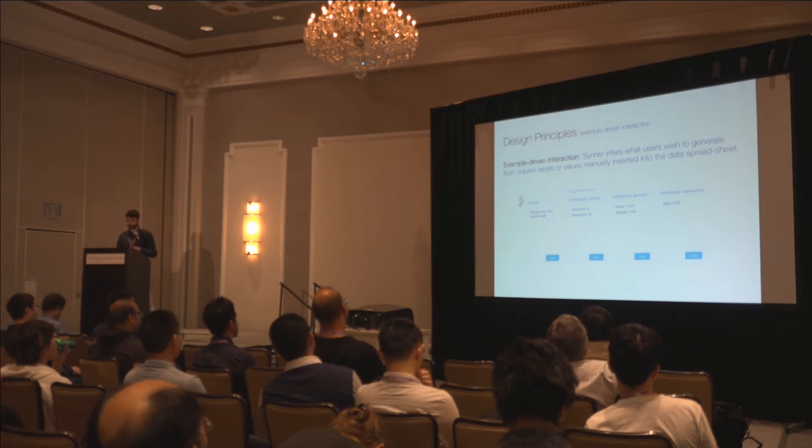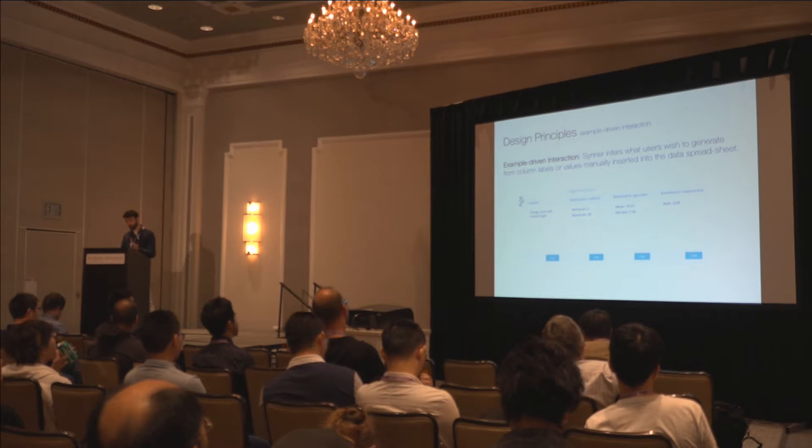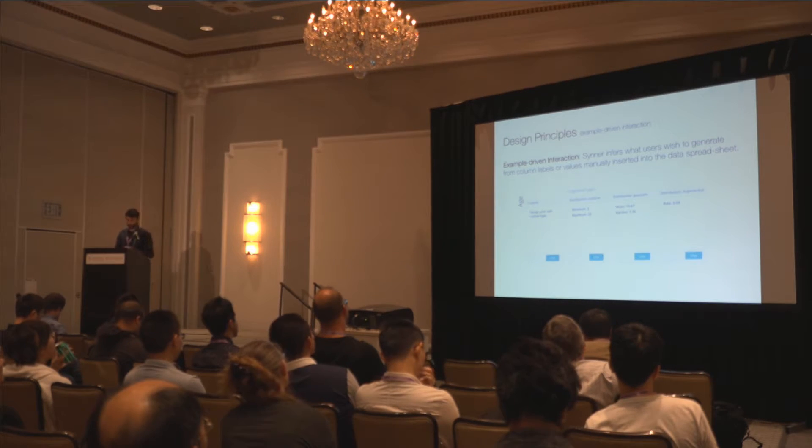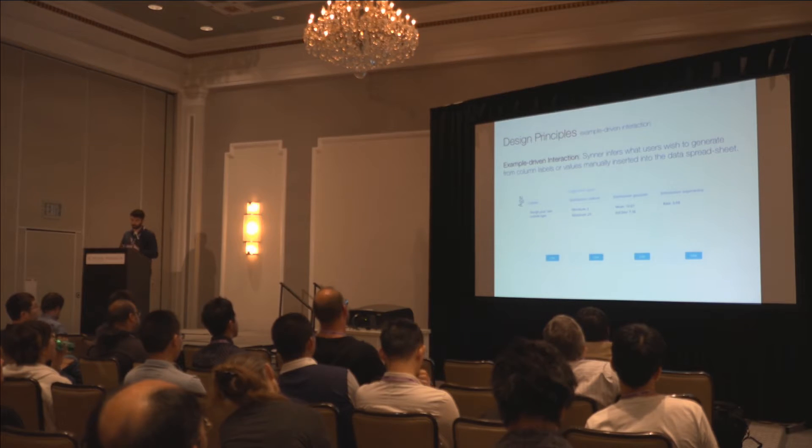Another principle is example-driven interaction. And SINNER infers what users wish to generate from column labels or values manually inserted into the data spreadsheet. So from few values inserted into the age column, for example, SINNER suggests a number of statistical distribution you may want to use.